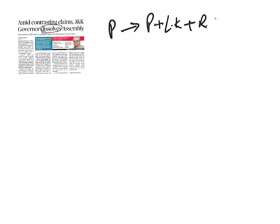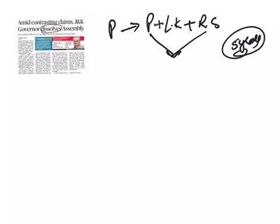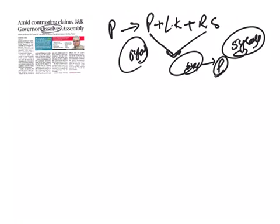Parliament comprises the President, Lok Sabha, and Rajya Sabha. The terms of the President and Rajya Sabha are fixed — five and six years respectively. Lok Sabha has a term of five years which can be dissolved earlier. Rajya Sabha is a permanent house, so there is no dissolution of Rajya Sabha even though the term of its members is fixed at six years. Lok Sabha has a five-year term and gets dissolved at the end of this period by an order of the President of India.